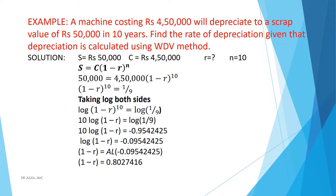1 minus R equals antilog of minus 0.09542425. Using a simple calculator, we get 1 minus R equals 0.8027416, so R equals 0.1972584, which is equal to 19.73%.